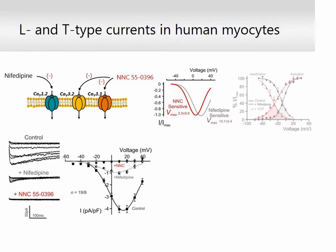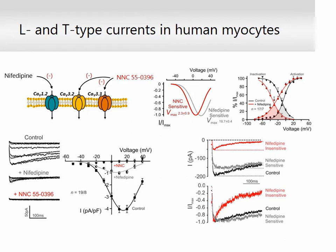Along the same line, activation and steady-state inactivation displayed a profound hyperpolarized shift subsequent to the addition of nifedipine. Kinetic analysis showed that nifedipine-insensitive T-type current inactivated faster compared to the L-type component. This data, in addition to other lines of evidence presented in our study, supports the successful separation of L- and T-type calcium channel conductances in human cerebral arteries.